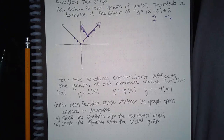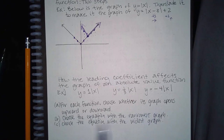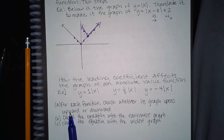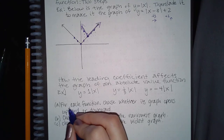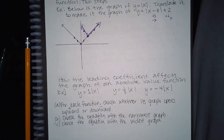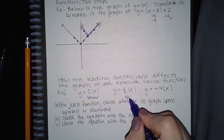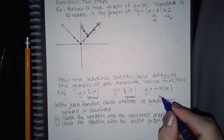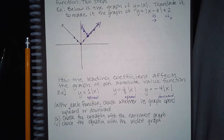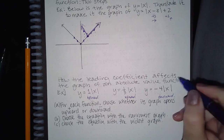The bottom of the problem asks about how the leading coefficient affects the graph of an absolute value function. It doesn't really matter what kind of function it is — what matters is how the numbers in front affect the parent function. For each function, choose whether the graph opens upward or downward. It opens upward if the number in front is positive, and opens downward — due to a reflection — if the number is negative. So the first two open upward, and the one with a negative opens downward.